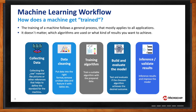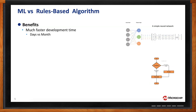Rules-based versus machine learning: the development time difference is days versus months. Going back to the apple example — if you want to add bananas, you take 100 pictures of bananas and retrain your model to recognize them. That's a few days of work at most. With a rules-based approach you'd have to write: if it's yellow, if it's curvy, if it's about 10 inches long — that's a very complex algorithm that takes months. And every time you want to add oranges, you go through months of development again, whereas with machine learning it's just days.